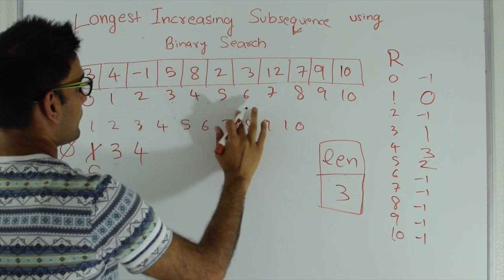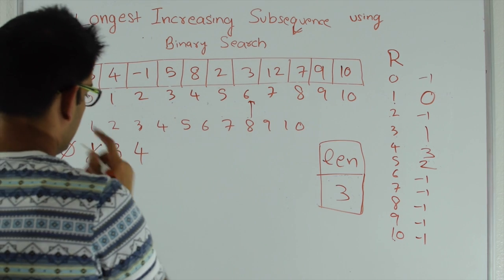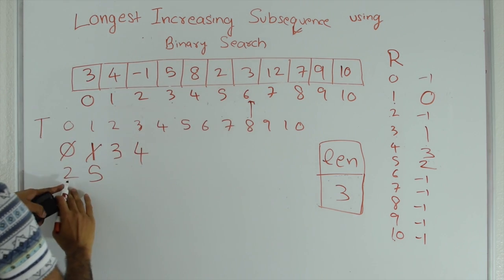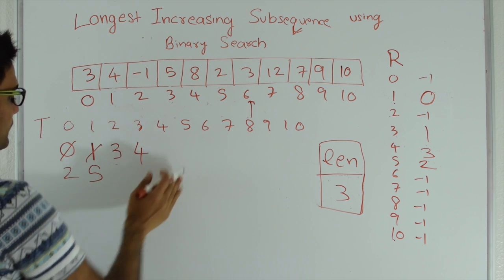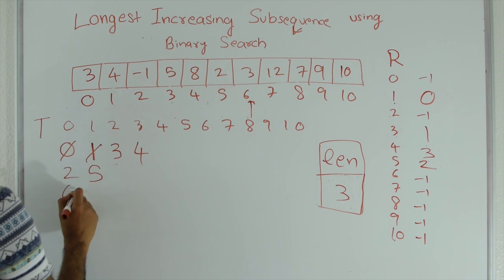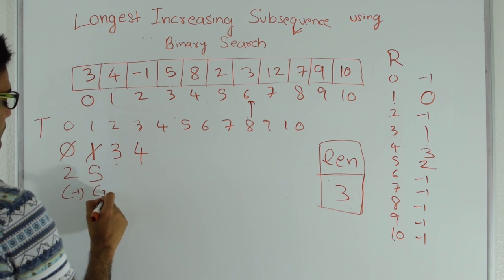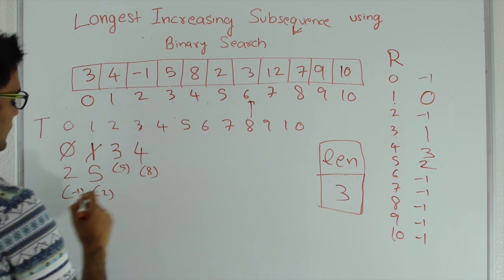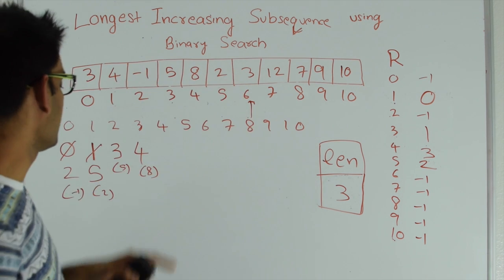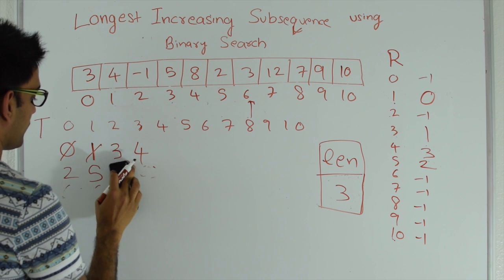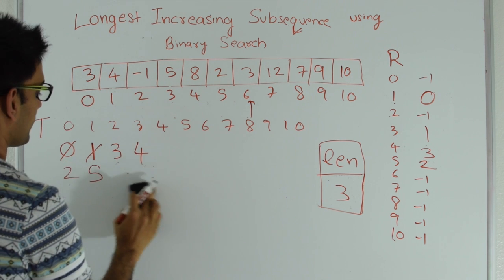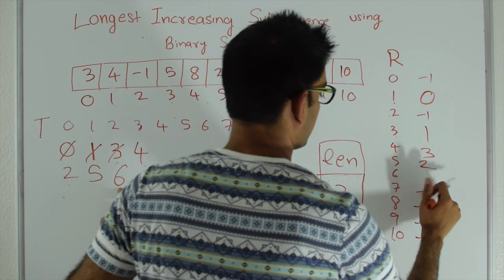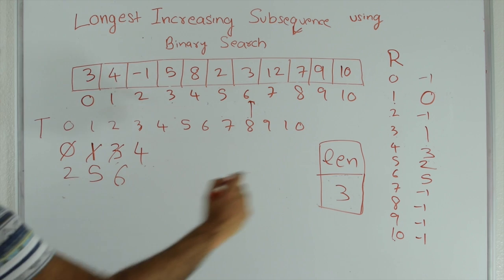Next, i goes to 6. The value at index 6 is 3, which is not greater than T[3] which is 8, and not less than T[0] which is minus 1. So it again falls somewhere in between. The current T values are: T[0]=minus 1, T[1]=2, T[2]=5, T[3]=8. We do a binary search for the ceiling of 3, which is 5 at T[2]. We replace T[2] with index 6, and record that index 6 comes from index 5.